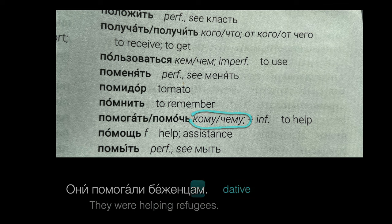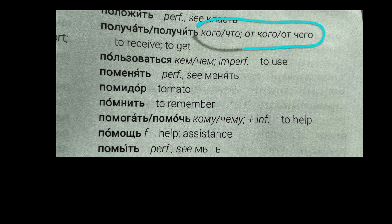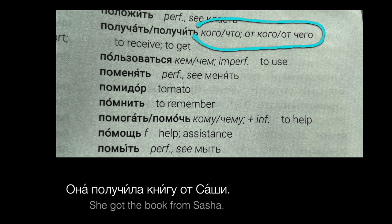These entries should also let you know if the meaning of a verb calls for more than one case or a preposition. ПОЛУЧАТЬ, ПОЛУЧИТЬ — КОГО, ЧТО, ОТ КОГО, ОТ ЧЕГО. Она получила книгу от Саши. So here you can receive someone or something — a direct object in the accusative — from someone or something, with the genitive after the preposition ОТ.